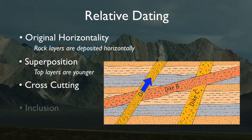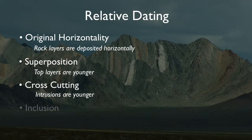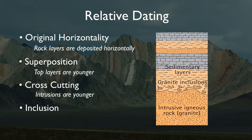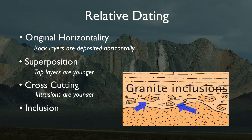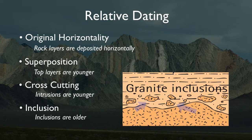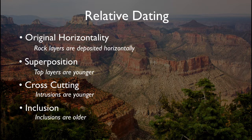Third, cross-cutting: when an igneous intrusion or a fault cuts through pre-existing rock, the intrusion is younger than the rock through which it cuts. Fourth, inclusions: when pieces of one rock are contained within another, the inclusion is older than the rock containing it.